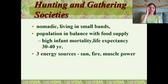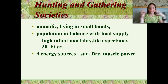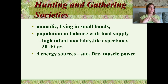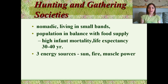Hunting and gathering societies were very nomadic, meaning they moved from place to place. They lived in small bands. There was a population in balance with the food supply, and they had a very high infant mortality rate. The mean life expectancy was between 30 to 40 years. They had three main energy sources: the sun, fire, and muscle power.